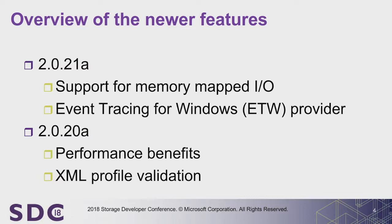Some of the earlier changes we made: we pushed out version 2.0 earlier this year. We had some performance benefits — for example, with the random number generator, we increased the performance so that if you're using random IOs, it has less performance impact on the system during the test. We also added support for profile validation.